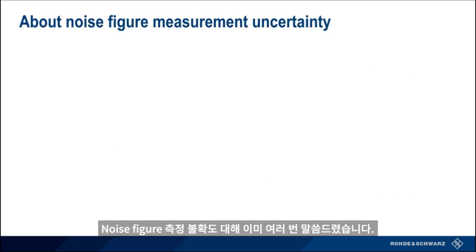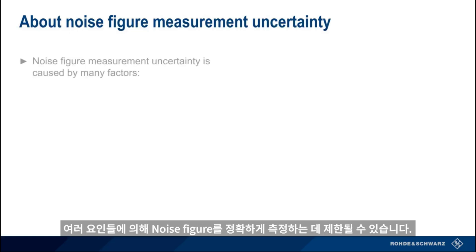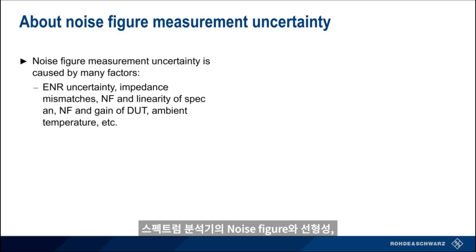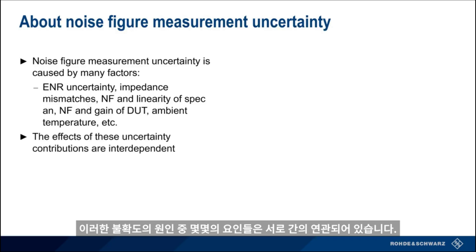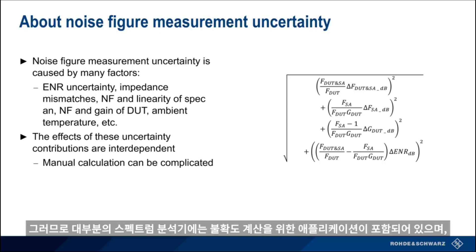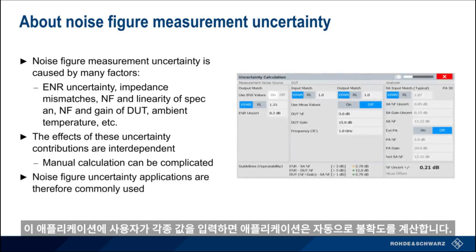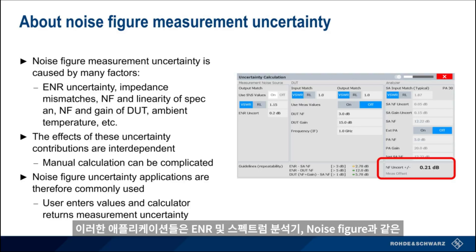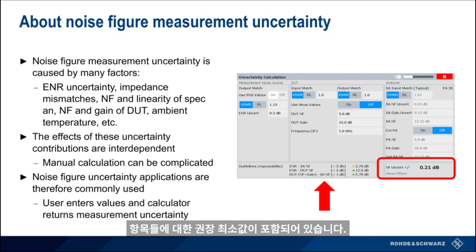Our ability to accurately measure noise figure is limited by many different factors — for example, the uncertainty of the ENR values of our noise source, impedance mismatches between the source, DUT, and analyzer, the spectrum analyzer's noise figure and linearity, the DUT's noise figure and gain, the ambient temperature, etc. Some of these sources of uncertainty are also mutually dependent. The manual calculation of uncertainty can be somewhat complicated, and therefore most spectrum analyzers also include an uncertainty calculator application, in which the user enters various values and the application automatically calculates and returns the measurement uncertainty. These applications often also include guidelines regarding recommended minimum values for things such as source ENR or spectrum analyzer noise figure.